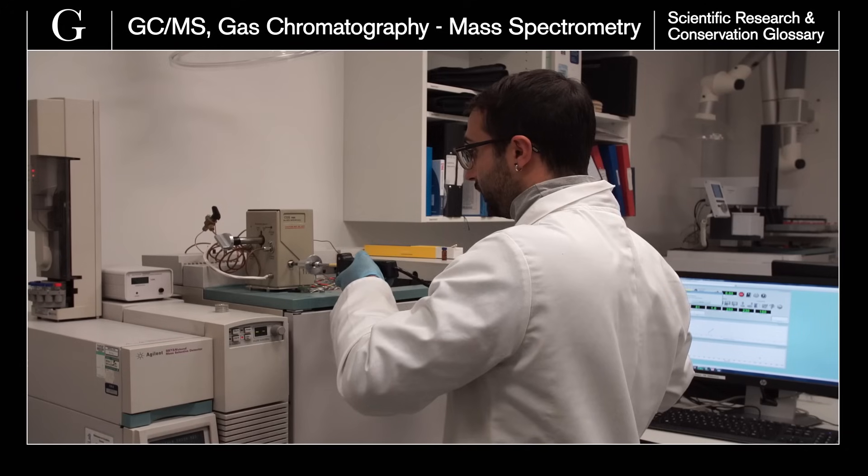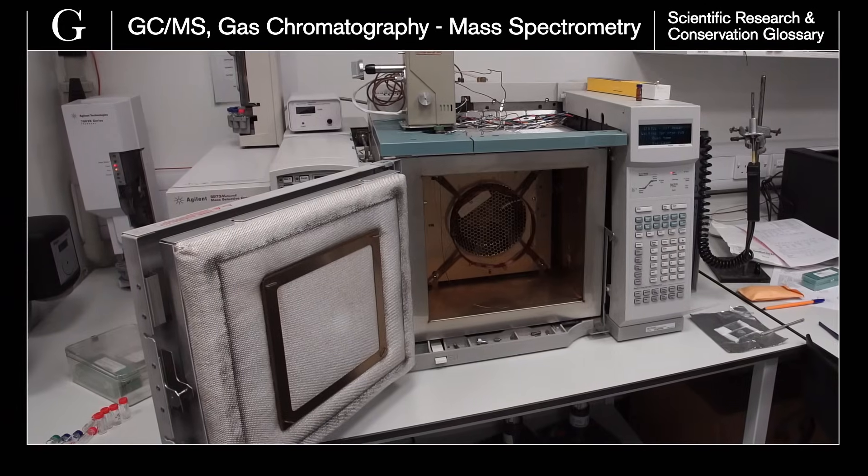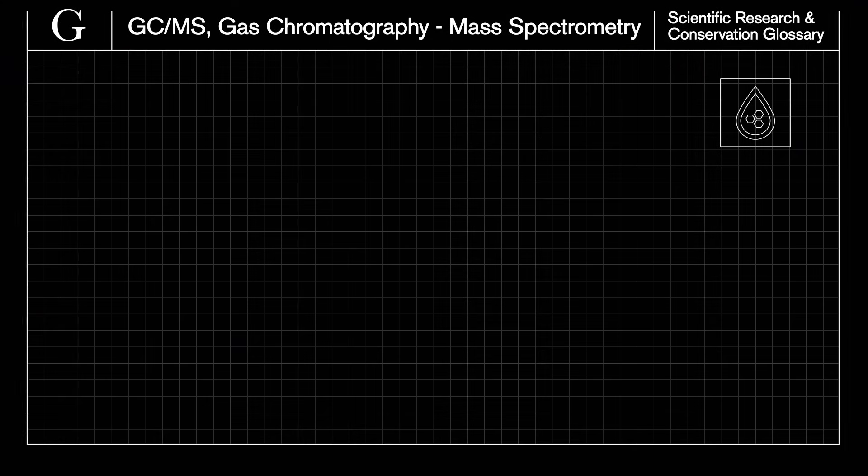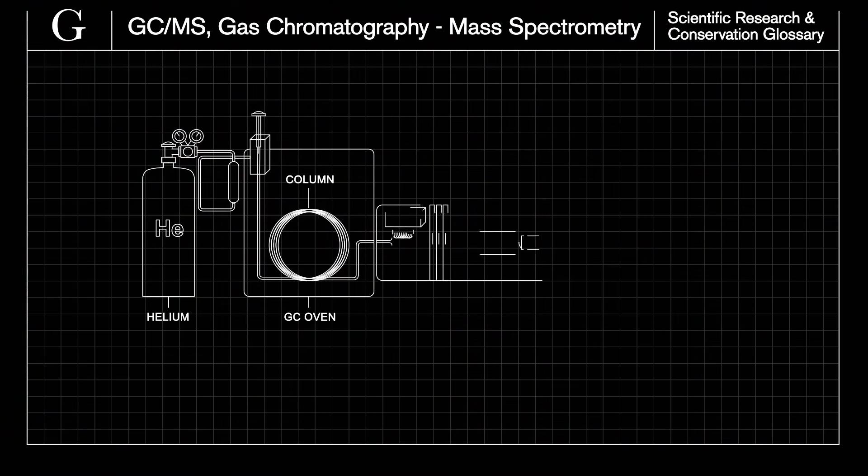Gas chromatography mass spectrometry is used to identify resins, fats, and waxes. A minute sample is dissolved and injected into the chromatograph, which is an oven containing a polymer-coated column. The samples move through a stream of helium gas and emerge into a detector, which produces a chromatogram.